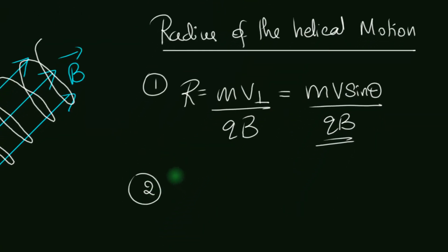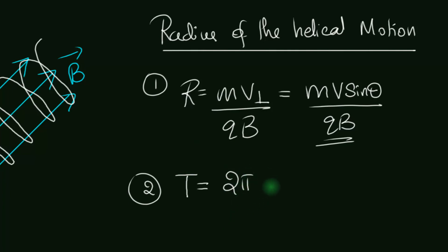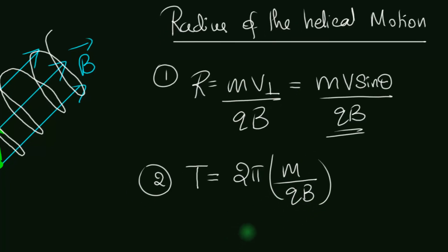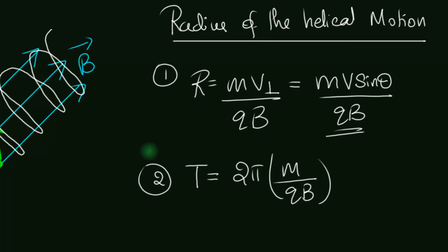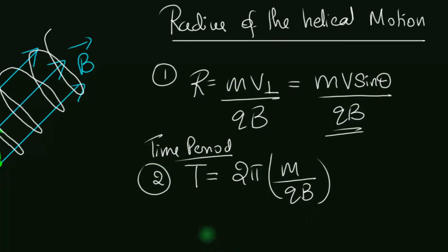The second quantity is the time period of the circular motion, and it's going to remain the same. The time it takes to complete one circle is independent of velocity: T = 2πr/v = 2πm/qB. So the time period does not change at all.